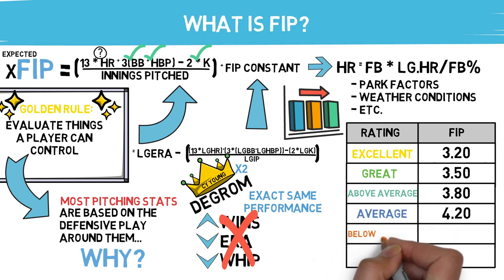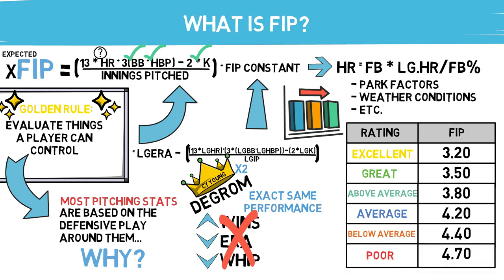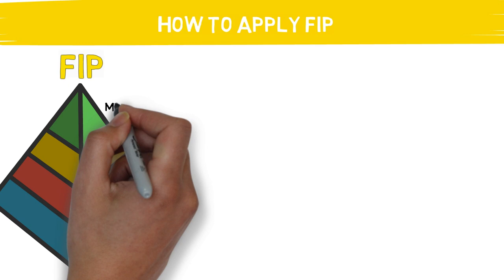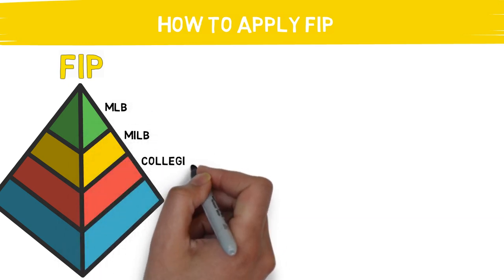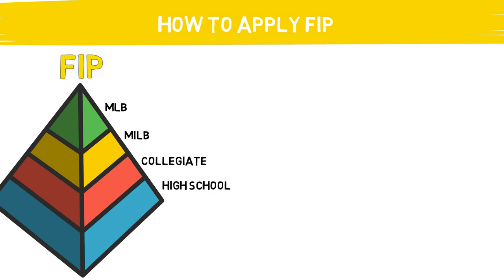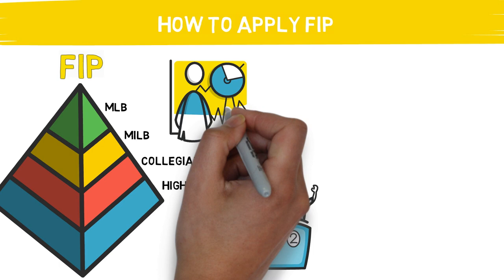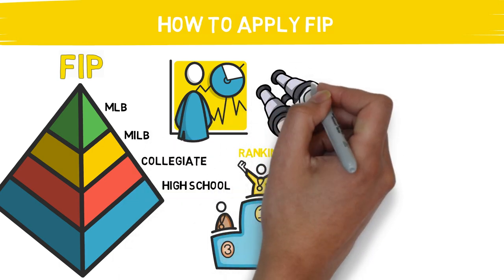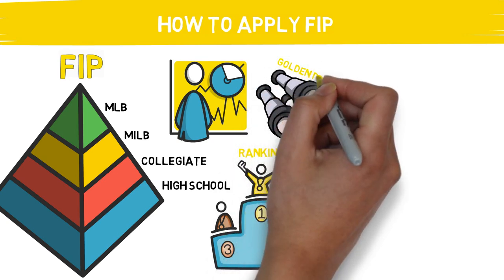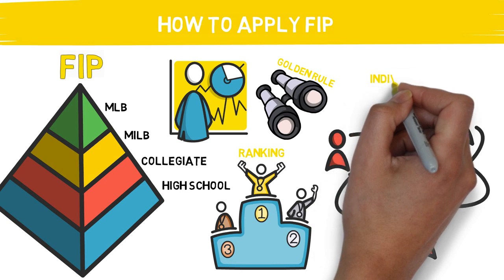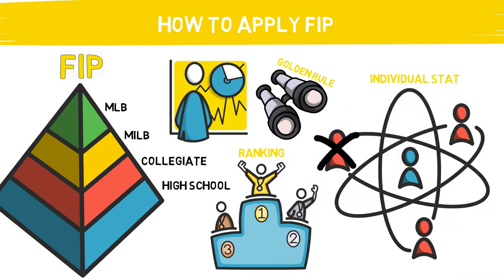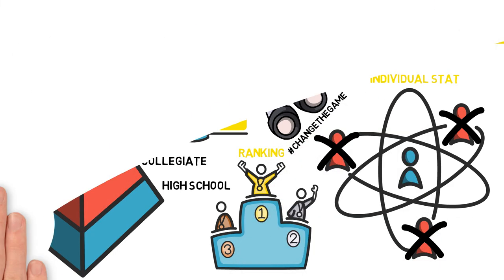Now that you understand what FIP is and how it's calculated, how are you supposed to apply it? FIP is a phenomenal stat because you can use it at whatever level you are at right now by simply manipulating your own constant. It can be used the same way you would utilize ERA, or how we talked about wOBA, to rank athletes based on their performance and their performance alone. My goal in doing these videos on sabermetric statistics is to help change the way each of you are looking at the game of baseball — giving you a new lens through our golden rule to properly analyze what you have in front of you. Pitching statistics are an individual stat, and the mainstream ones often don't treat it like one by relying on the team's play around each pitcher, so help me spread the word by sharing this video with a friend.